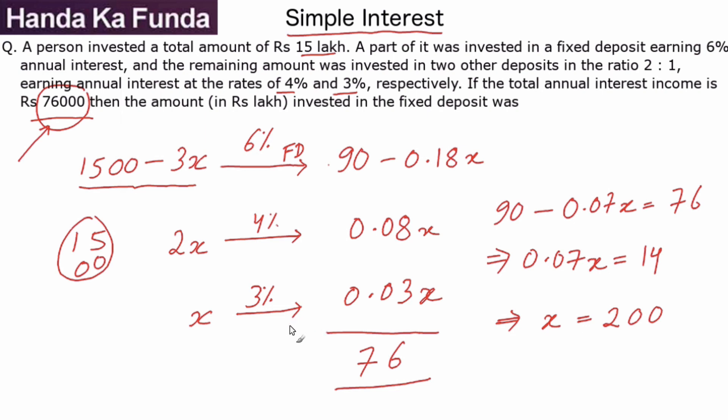Which means x is 200,000. 2 lakhs was invested at 3%, double of that is 4 lakhs was invested at 4%.